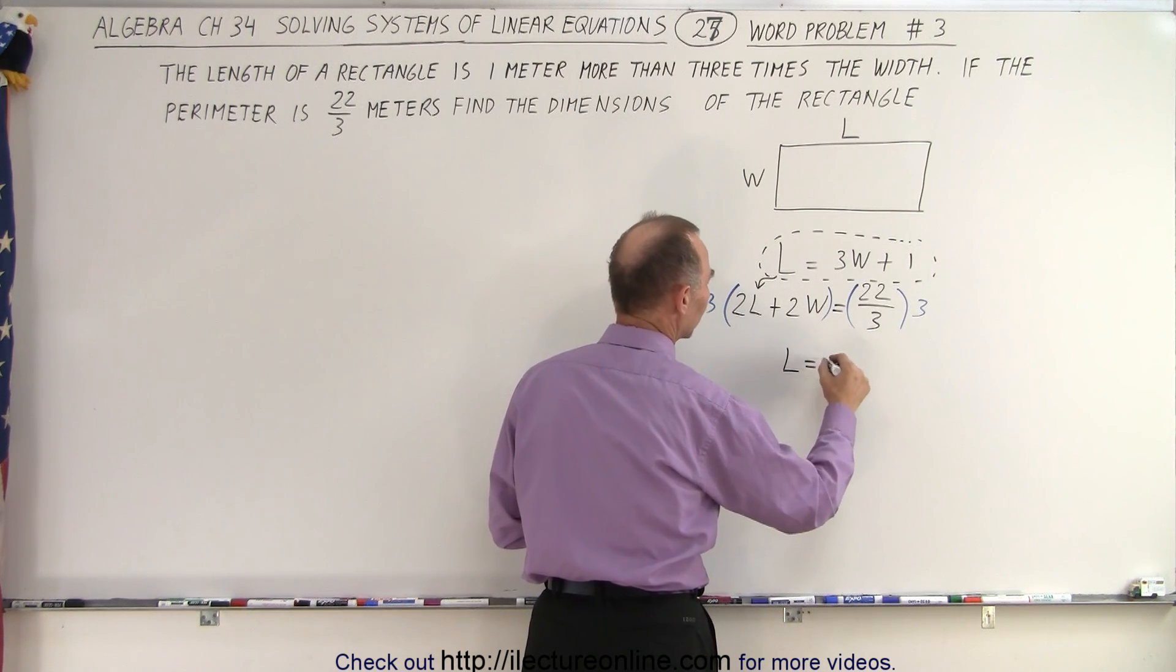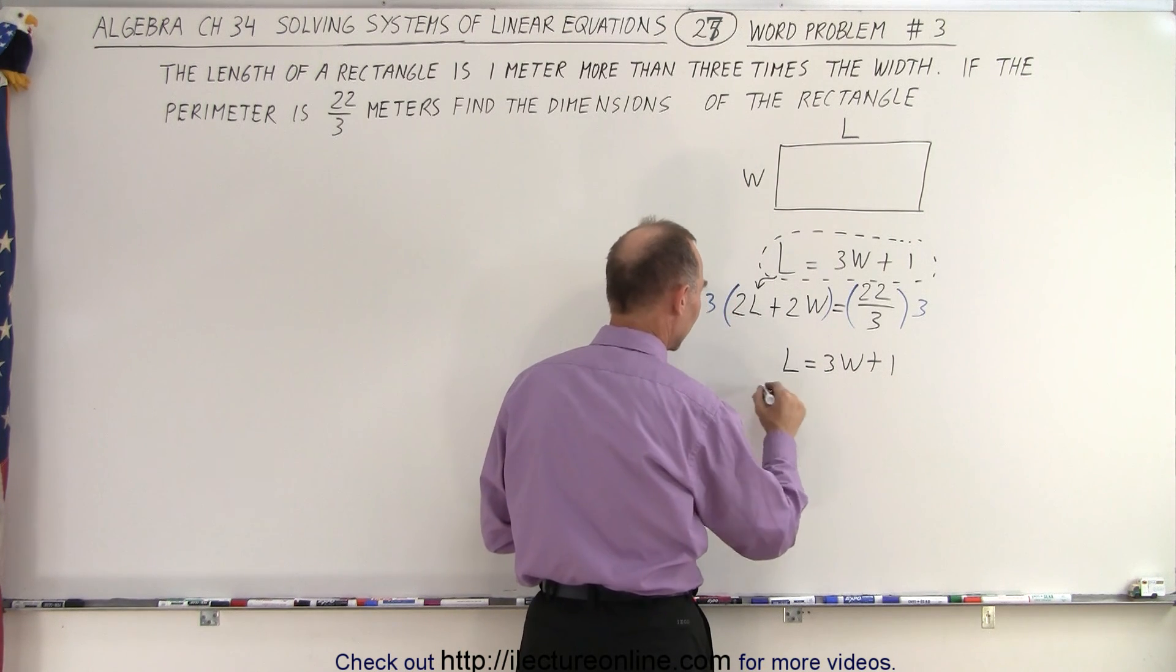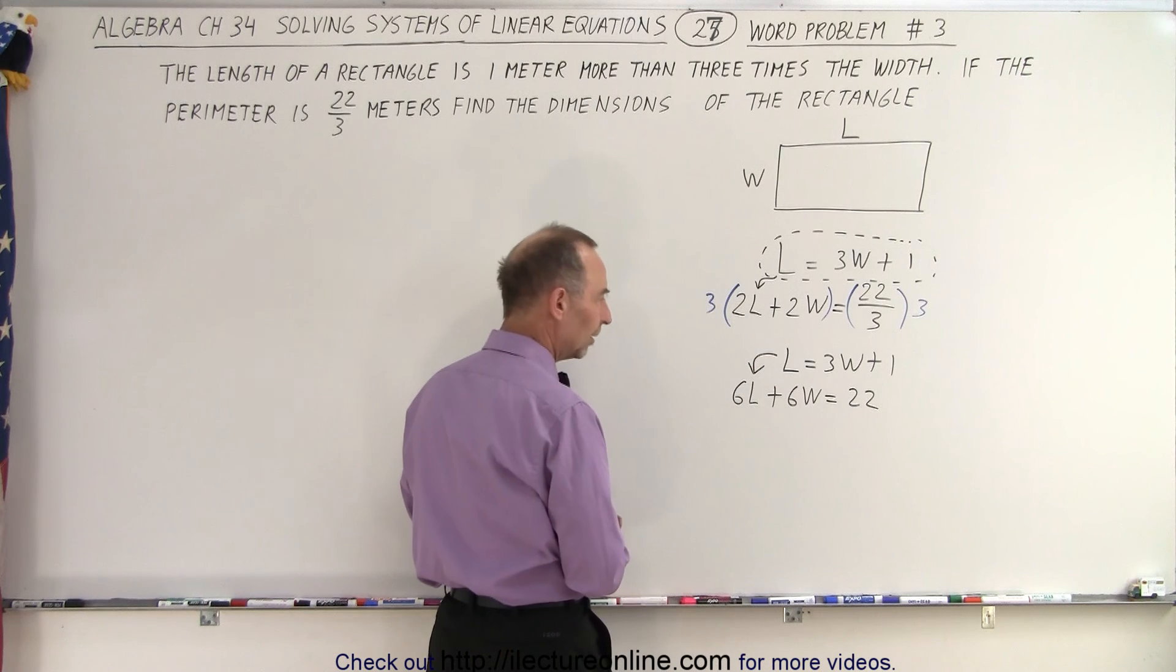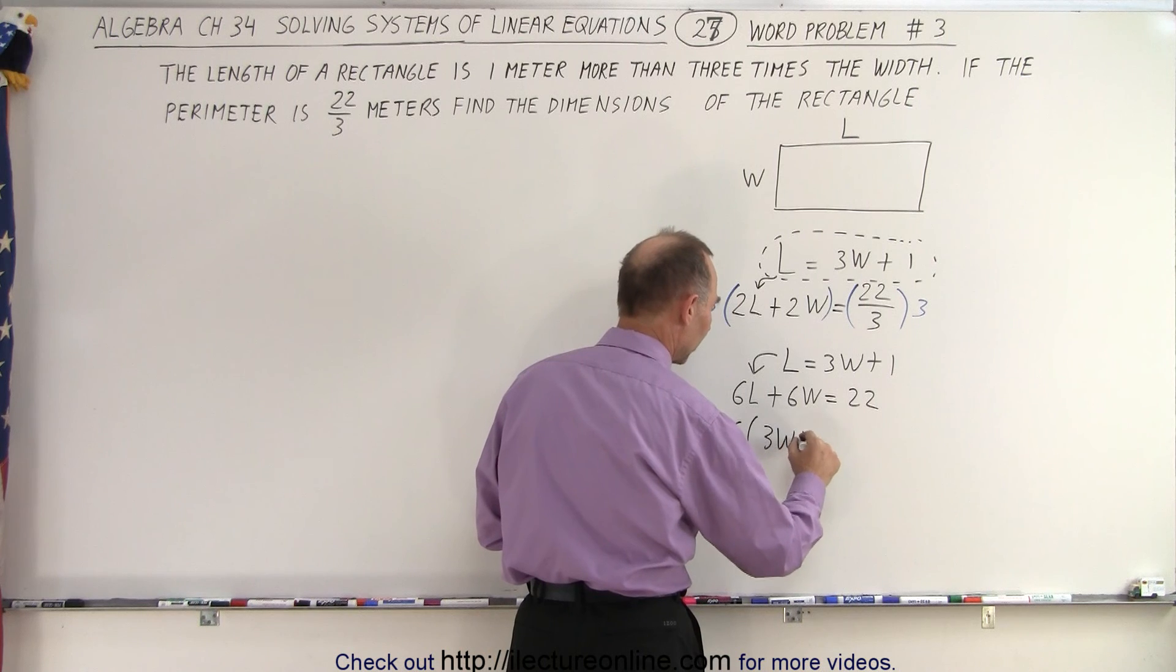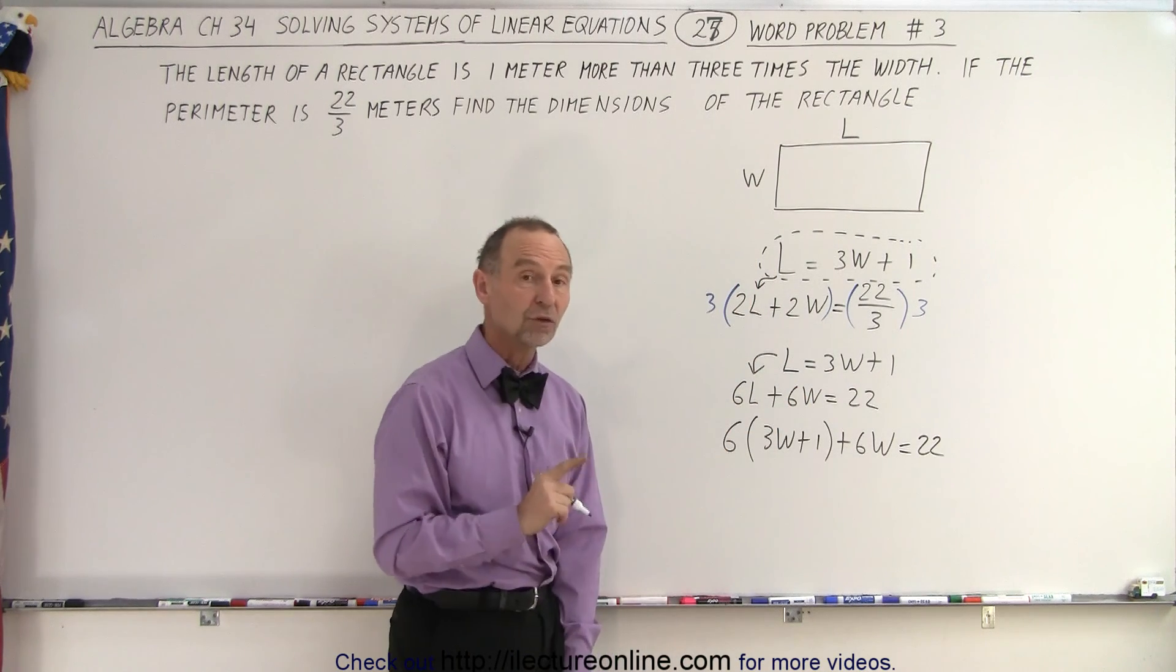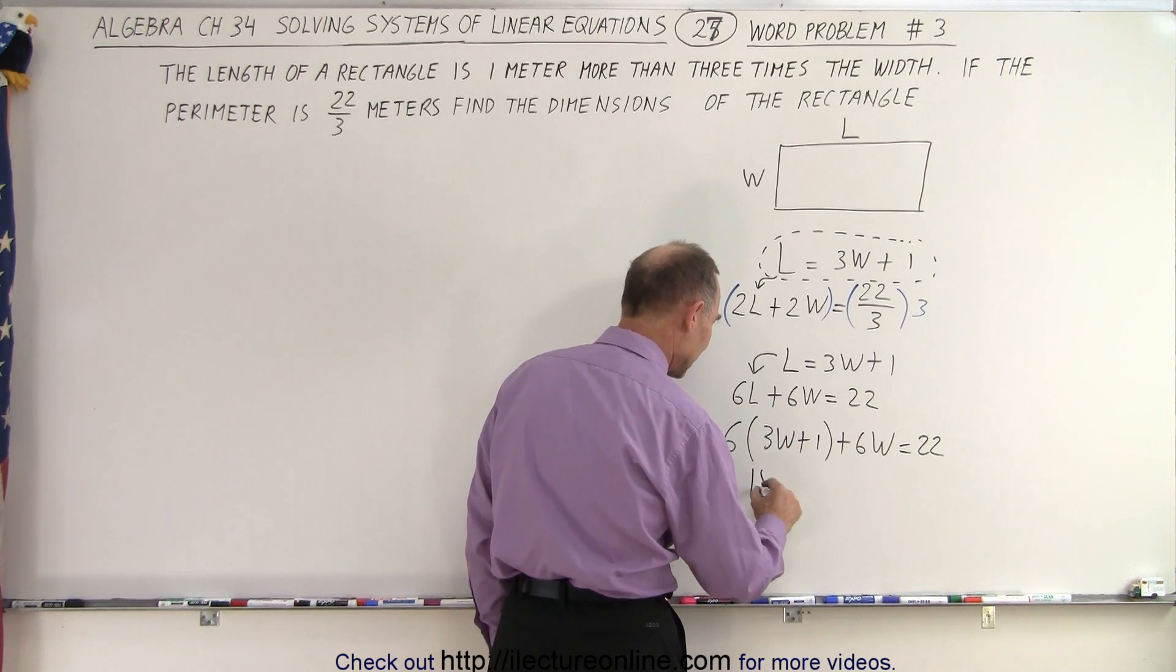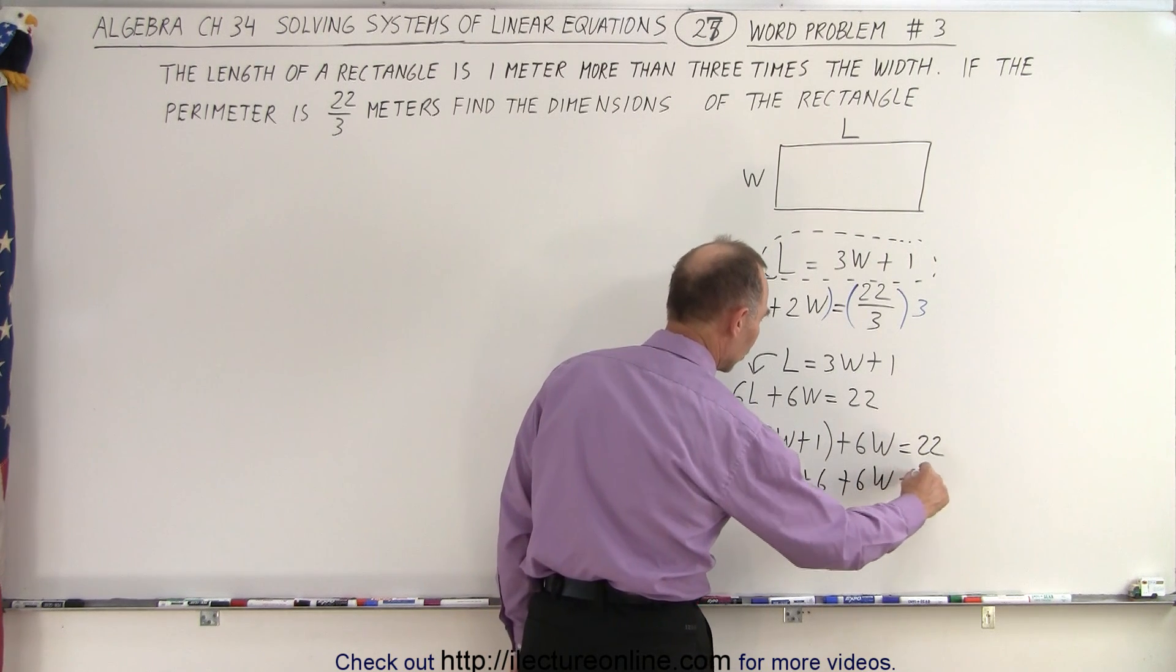So again, we have L is equal to three times the width plus one. And here we get 6L plus 6W is equal to 22. And now this L will be substituted in there. So we get 6 times L, which is 3 times the width plus 1, plus 6 times the width is equal to 22. And now we have an equation with just one variable in it. Let's get rid of parentheses by applying the 6 to both terms inside the parentheses. So we have 18 times the width plus 6 plus 6 times the width is equal to 22.